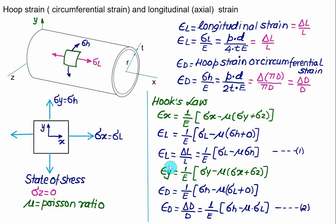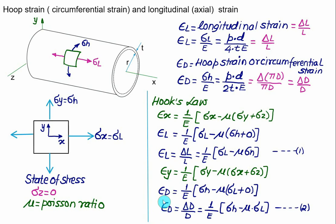The reason we calculate these strains is that they help us determine the maximum allowable pressure a thin-wall pressure vessel can withstand before failure. If the pressure exceeds this limit, the vessel may rupture or leak, leading to serious consequences. Once we know the hoop strain and longitudinal strain — the change in diameter and change in length — we can calculate the change in volume and define the volumetric strain.